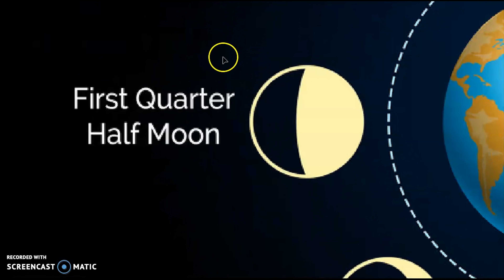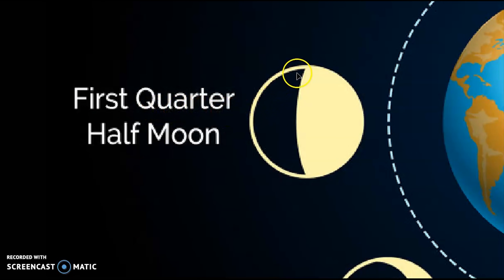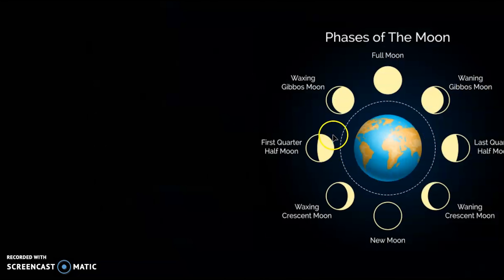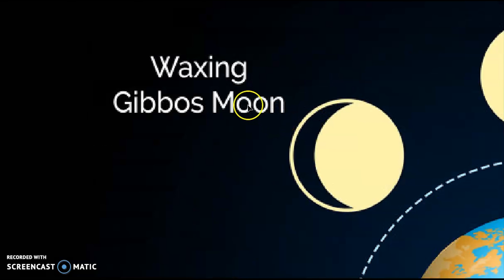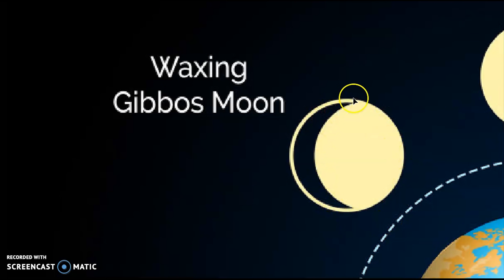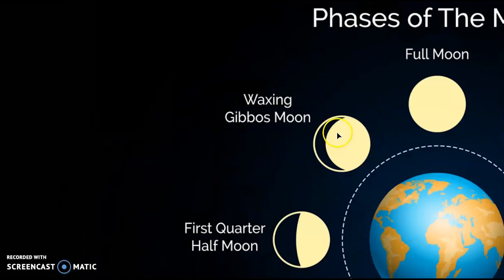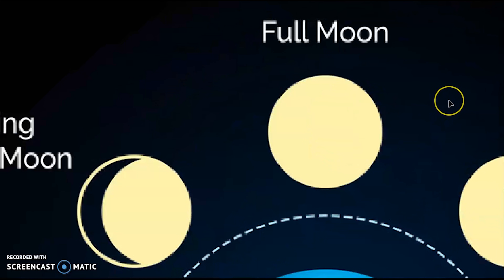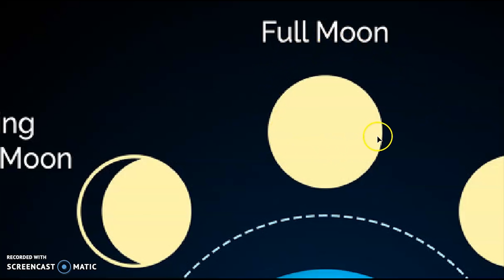After waxing crescent comes first quarter. In this phase we can see half of the lighted part. Then comes waxing gibbous. We can see more than half of the lighted part in this phase. After waxing gibbous comes full moon. In this phase we can see the fully lighted part of the moon.